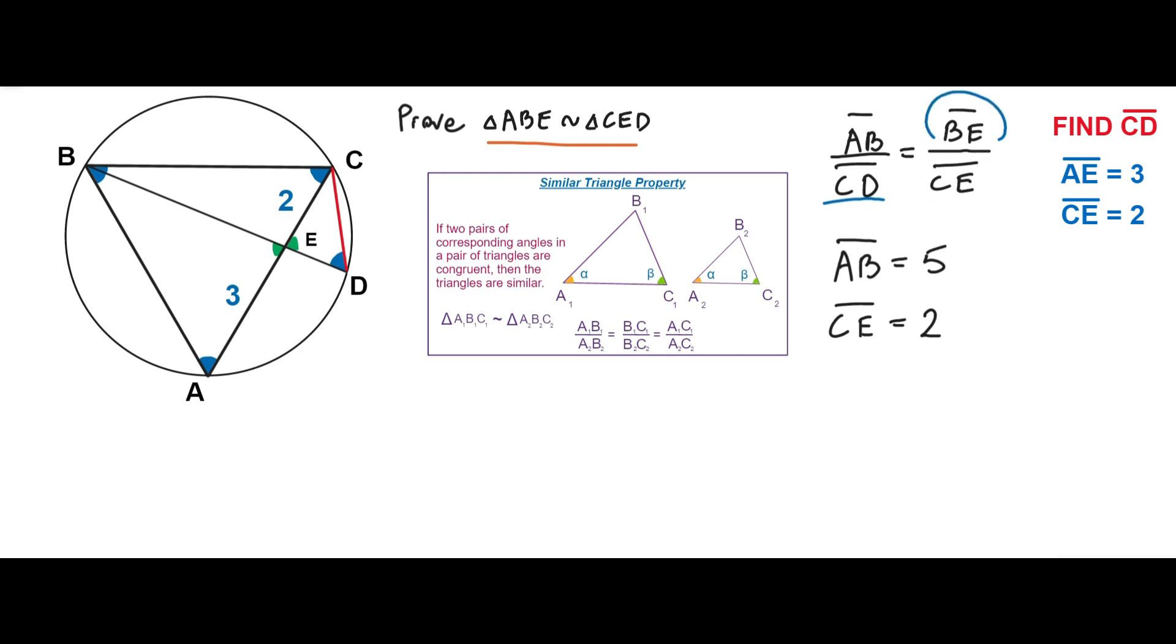Let's draw an altitude from the vertex B to the side AC and label this point F.